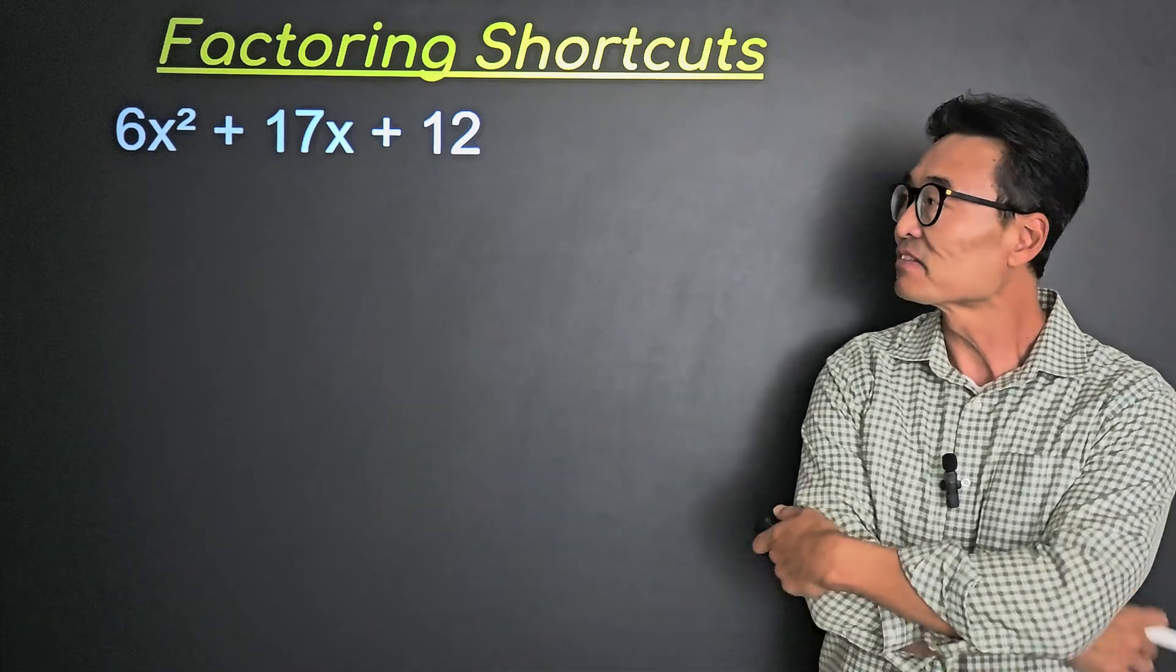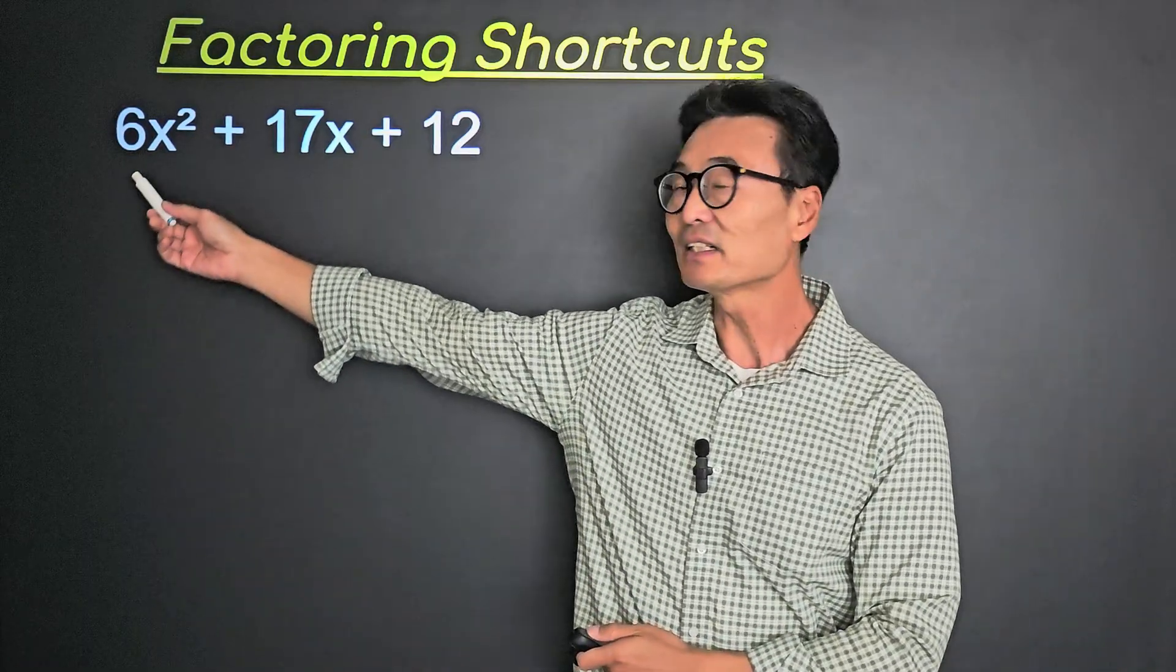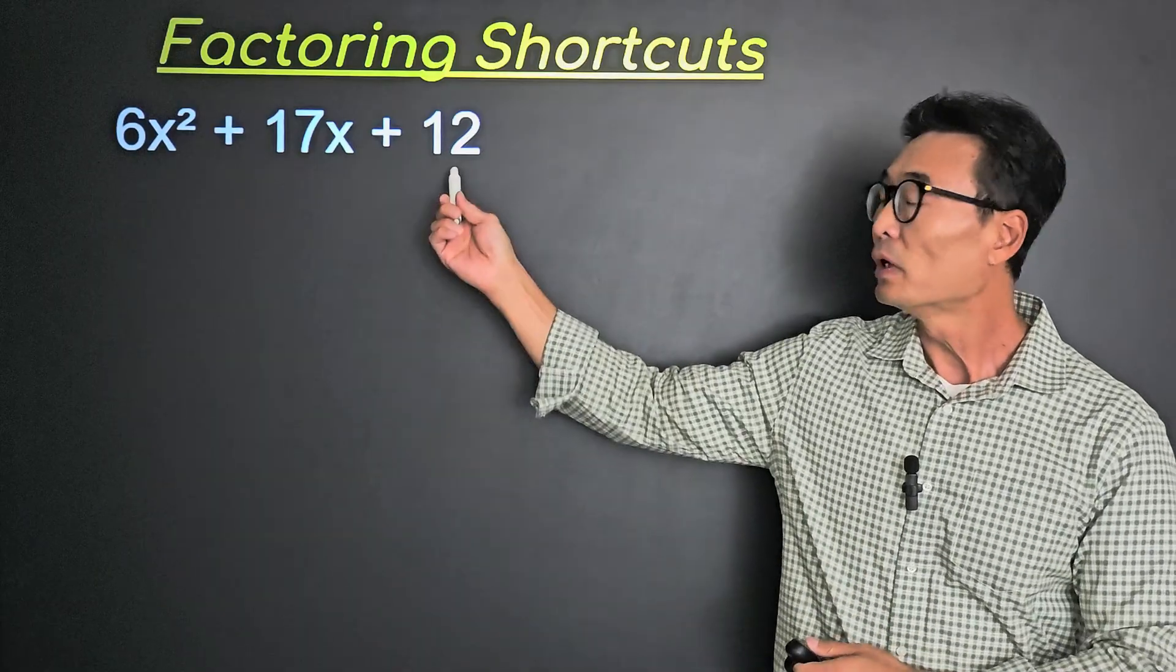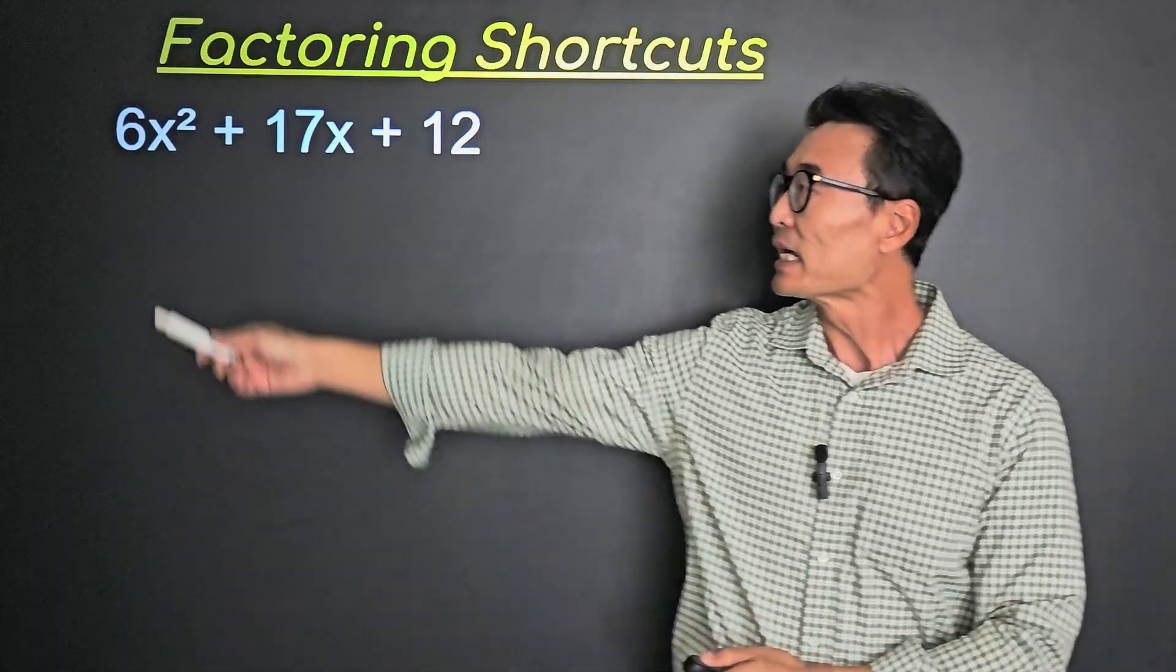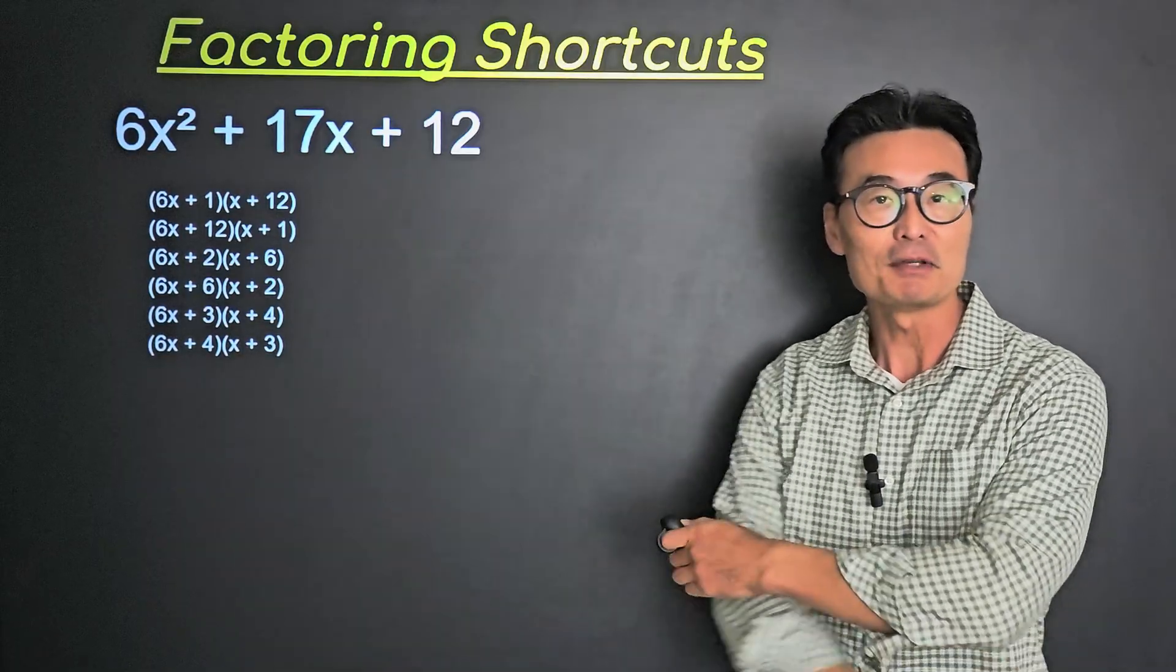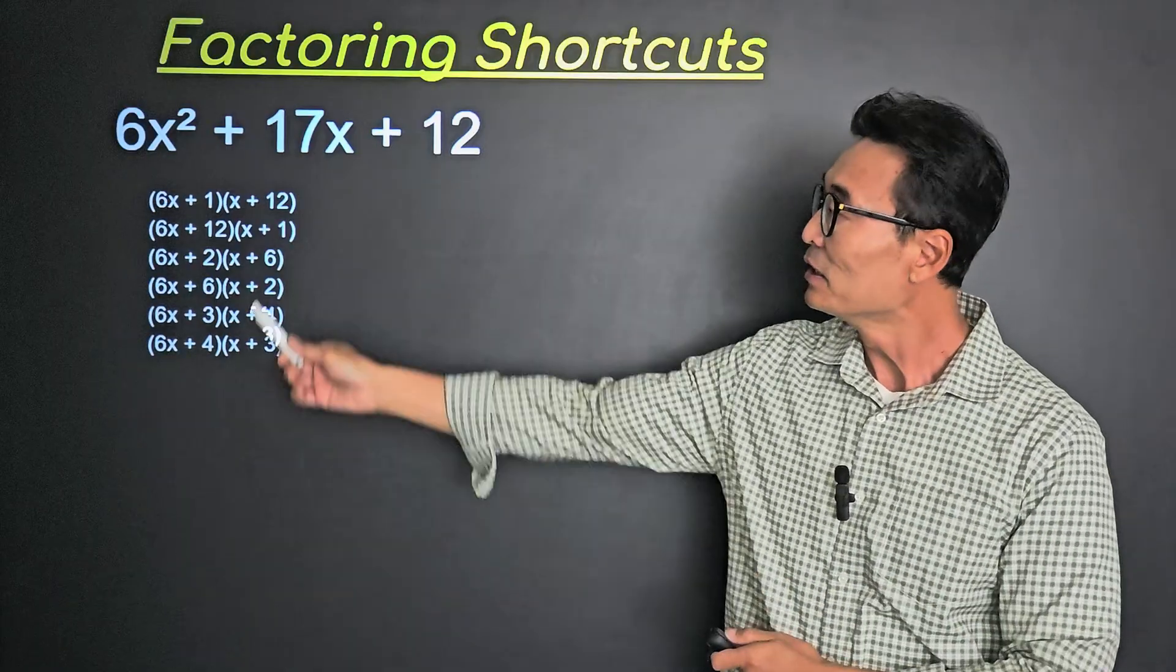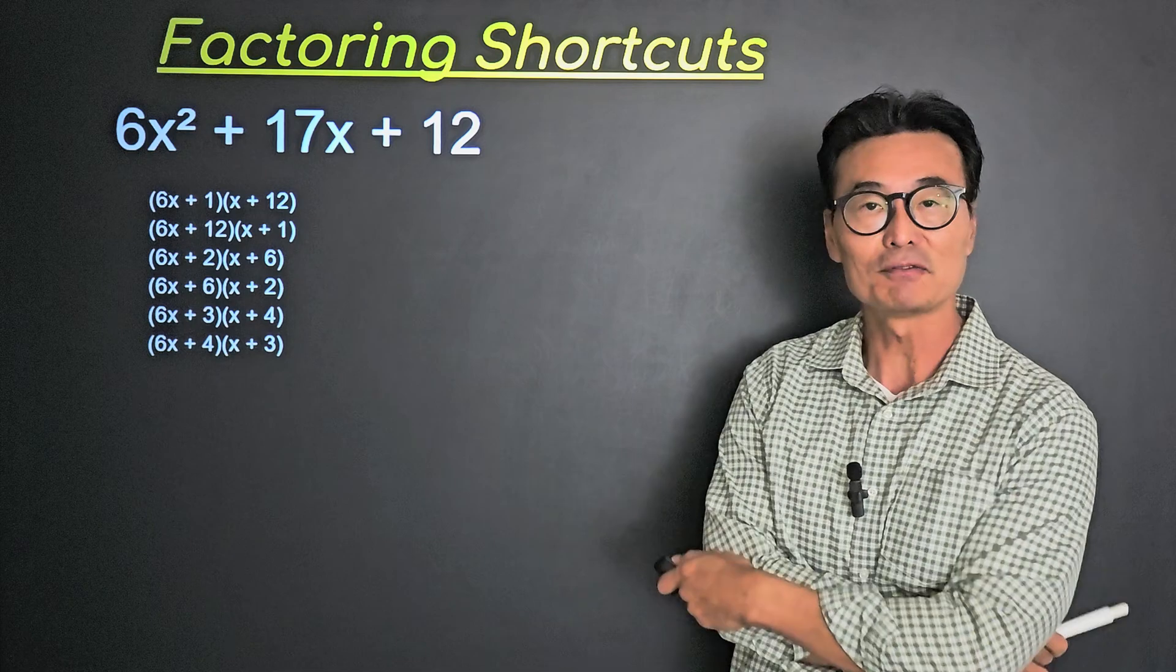Well, let's begin. Here we have a trinomial, 6x² + 17x + 12. Notice that 6 has 4 different factors and 12 has 6 different factors, meaning with that 6 in the front, there are 6 ways this trinomial can be factored.